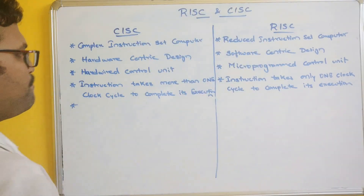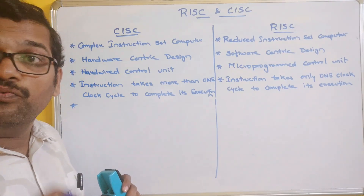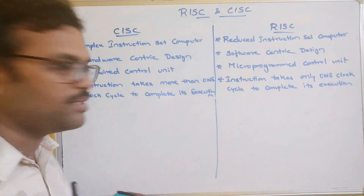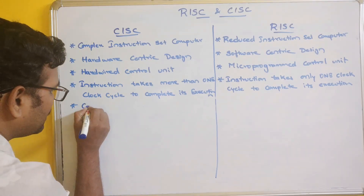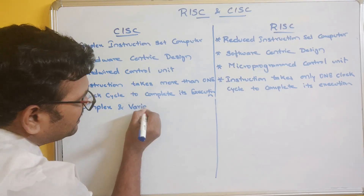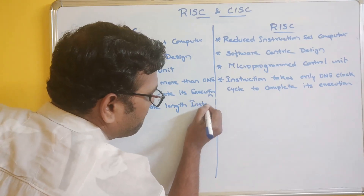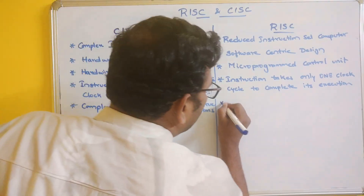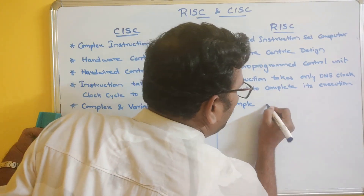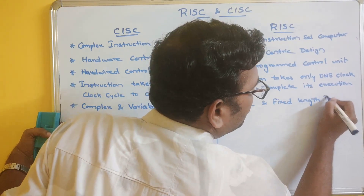In CISC, these are complex instructions and variable-length instructions. In RISC, these are simple instructions and fixed-length instructions. So CISC architecture consists of complex and variable-length instructions, whereas RISC consists of simple and fixed-length instructions.